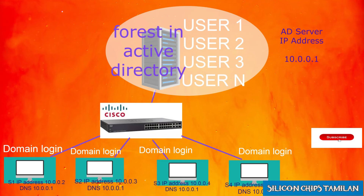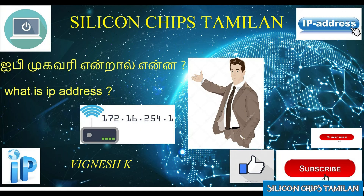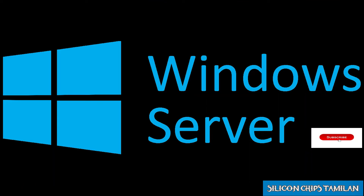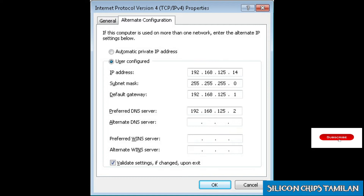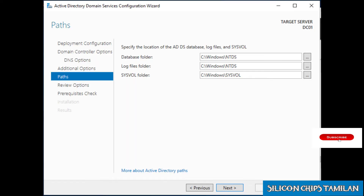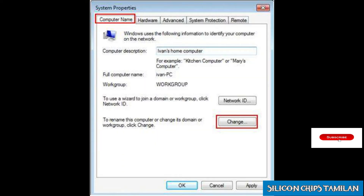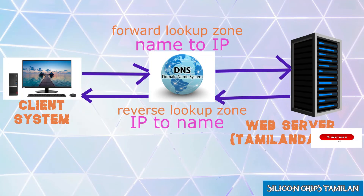What are the requirements to install Active Directory? You need to install it on a server operating system, assign a static IP address, configure an NTFS partition, configure the workgroup, configure DNS, and satisfy the system requirements.